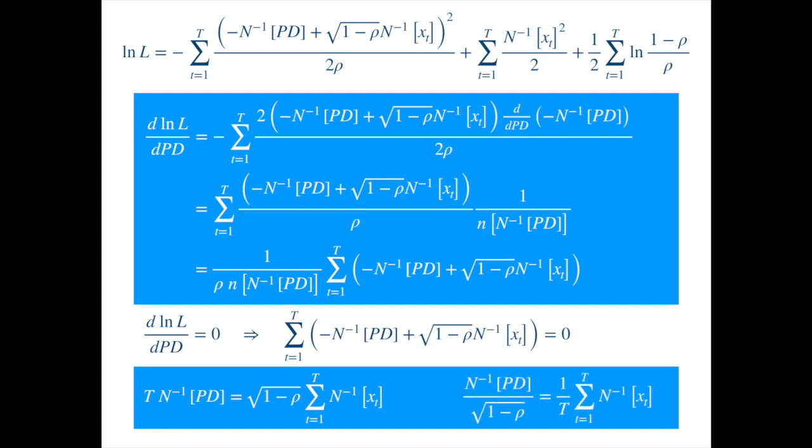The right hand side is just the mean of the inverse of the conditional default rates, so the formula is exactly what we saw before.